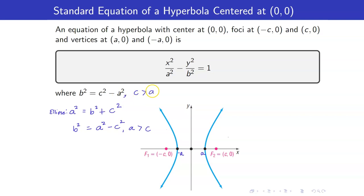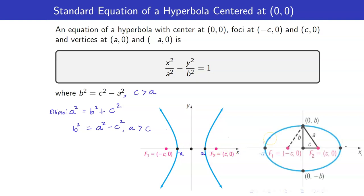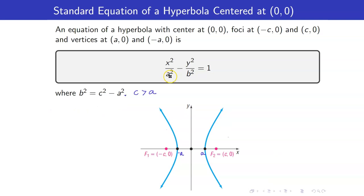If you look at the hyperbola, notice that the focus is inside the inner region of the hyperbola — hence C is greater than A. Whereas for an ellipse, C is really smaller than A. The shape of the hyperbola will be determined by which variable appears first. If X appears first, your hyperbola is opening sidewards.